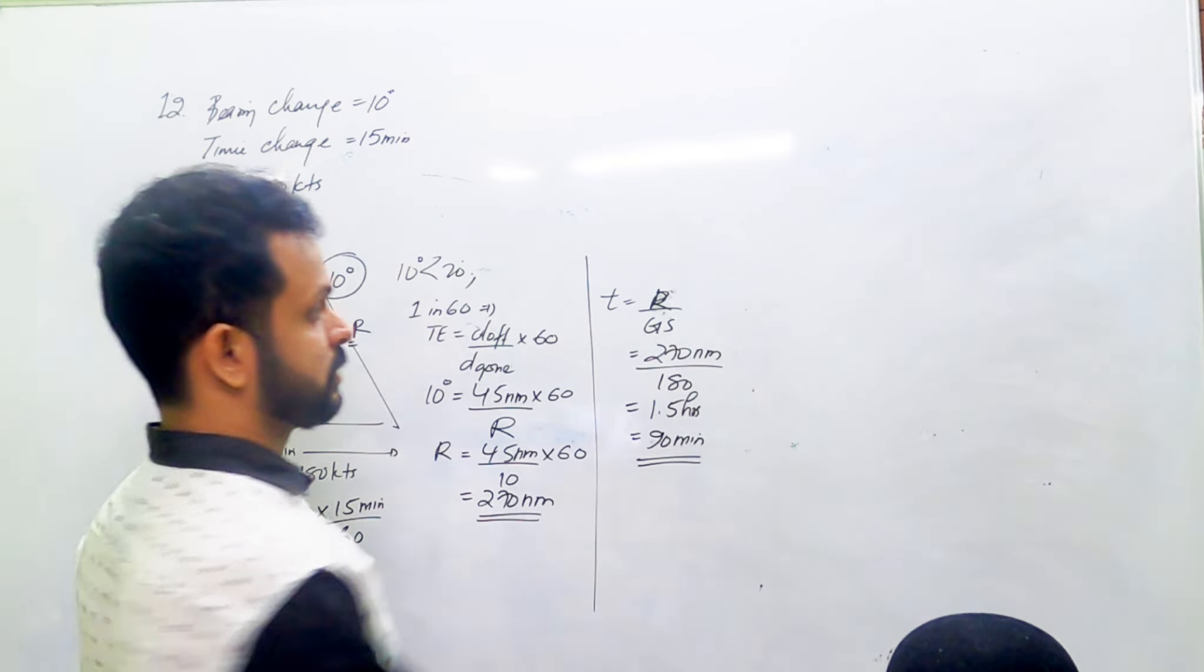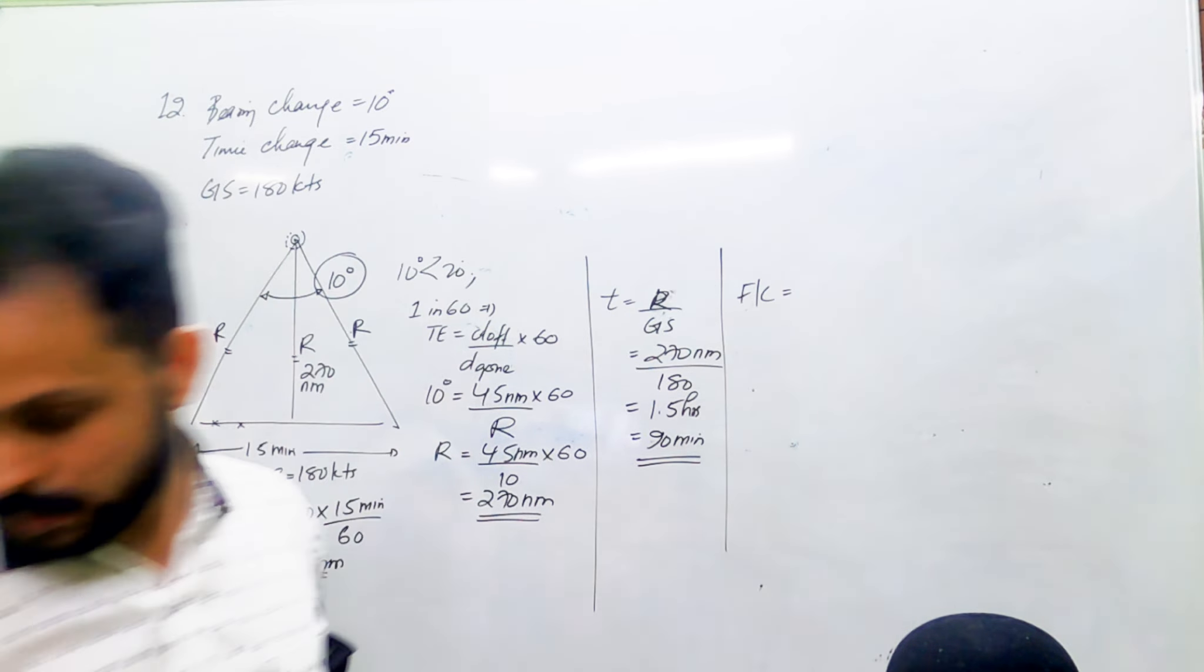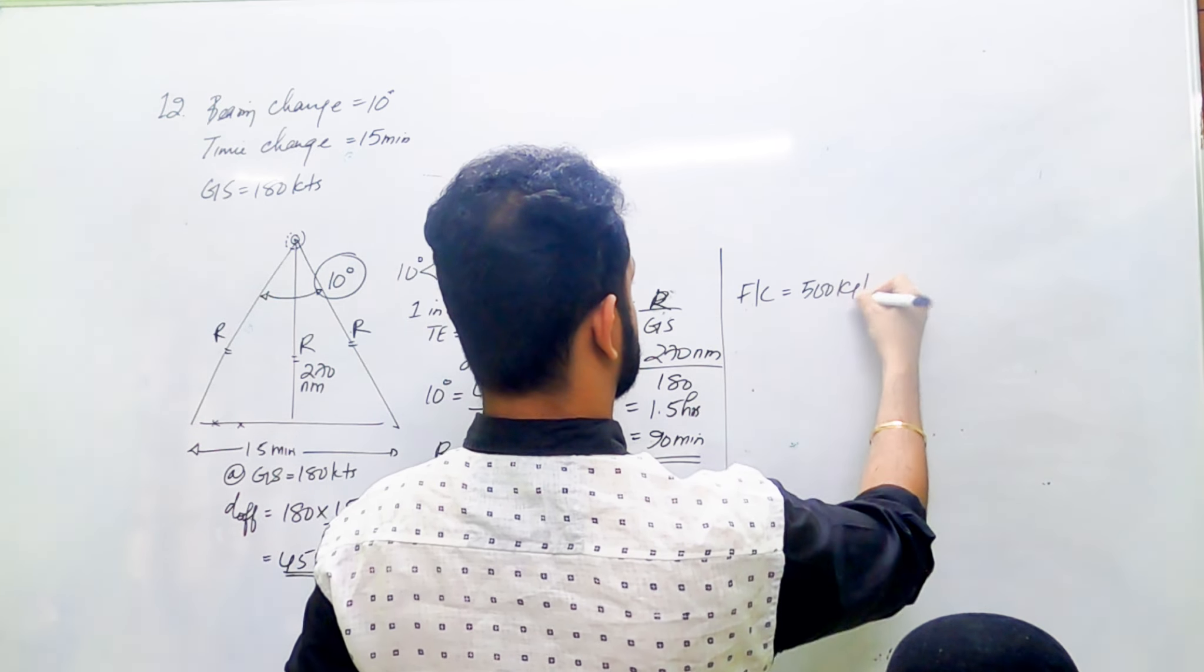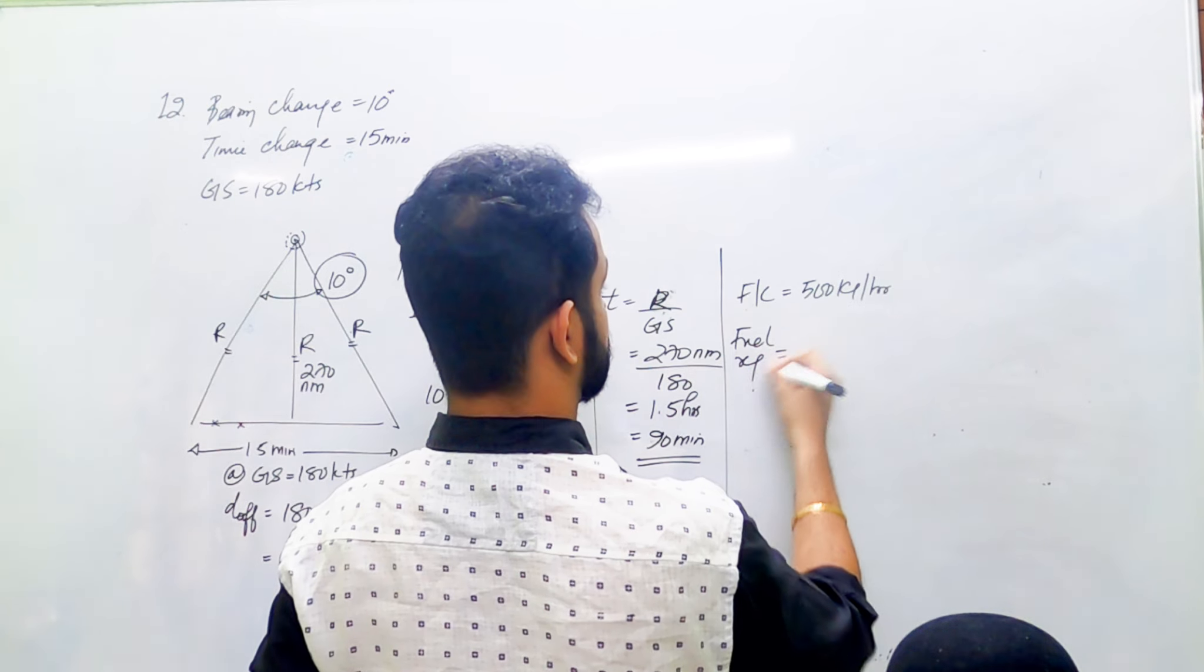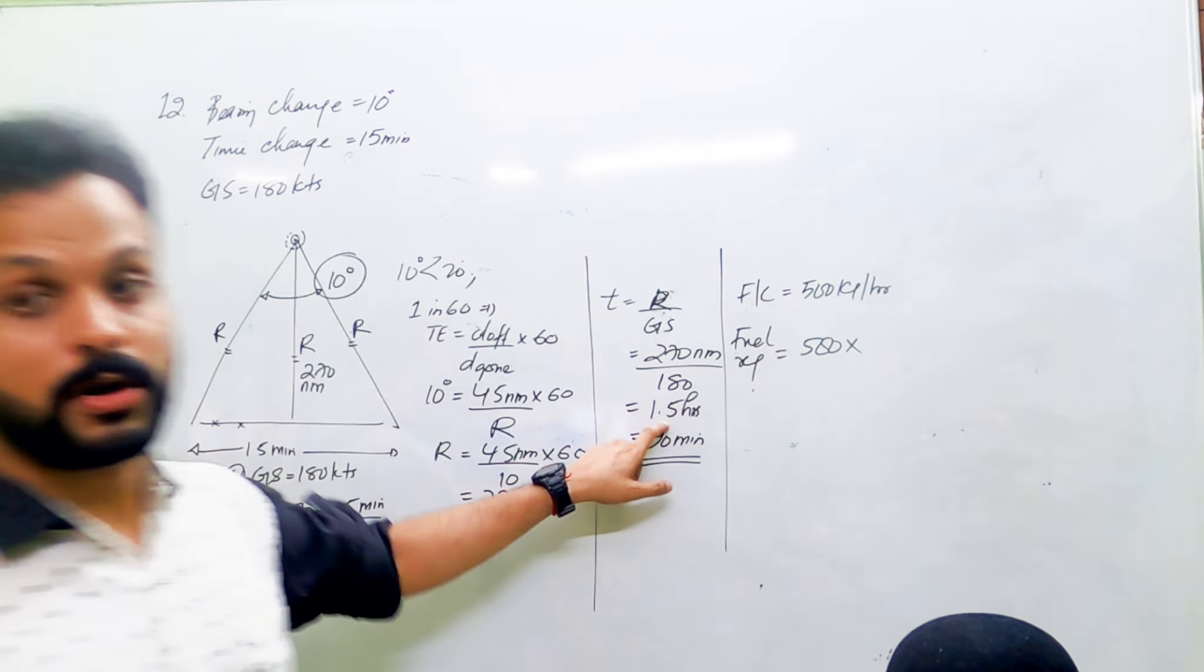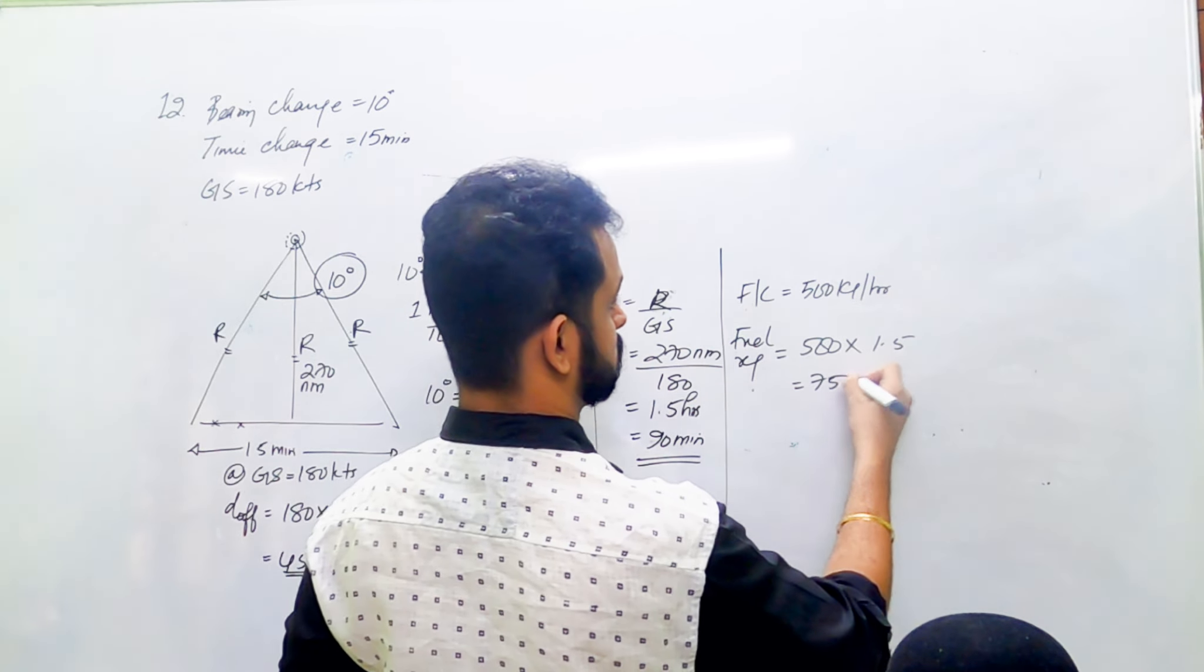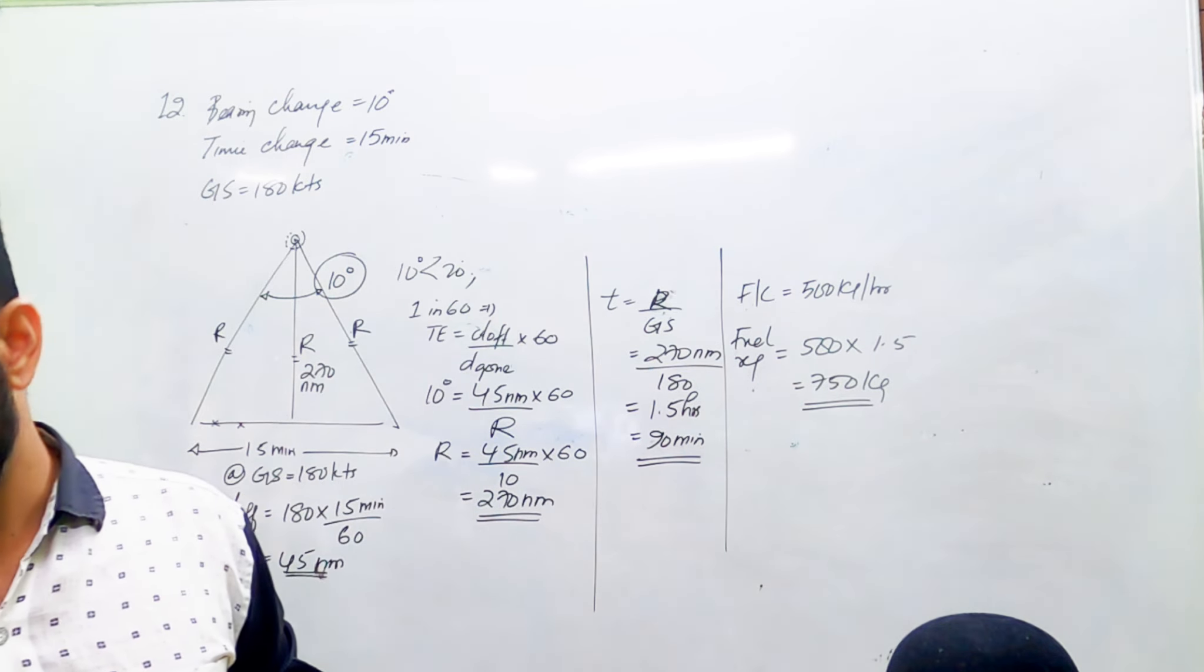The fuel consumption is 500 kg per hour. What's the fuel required to cover this range? 500 times 1.5 hours equals 750 kilograms.